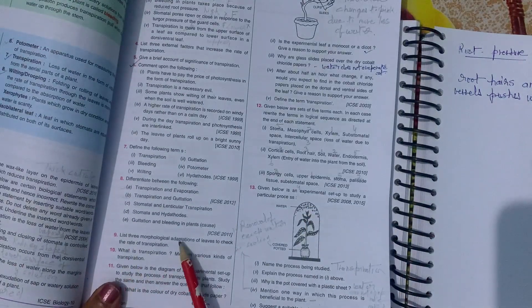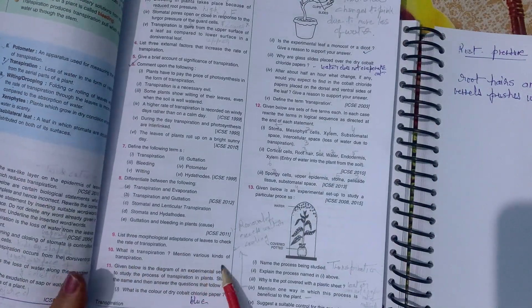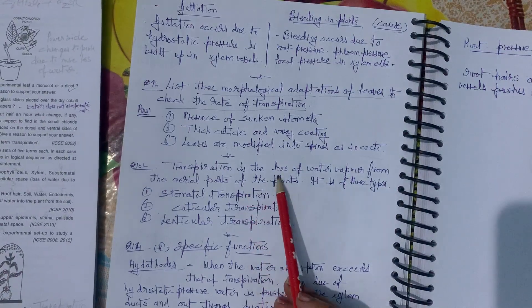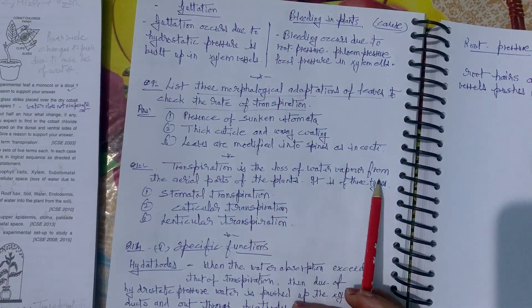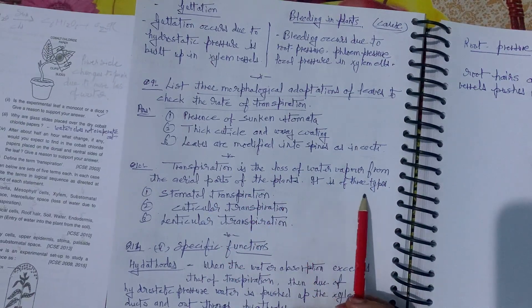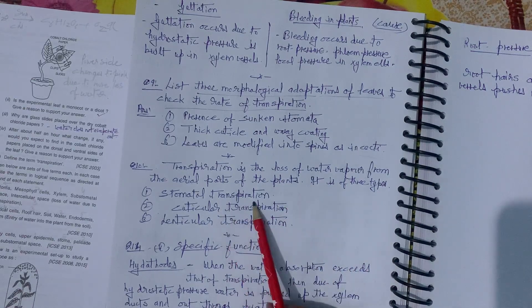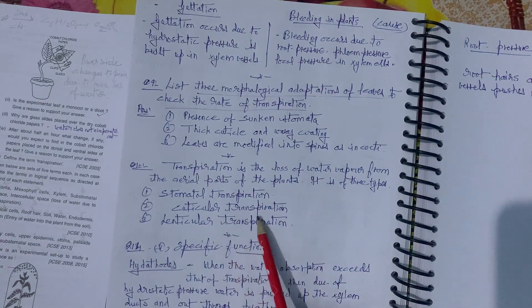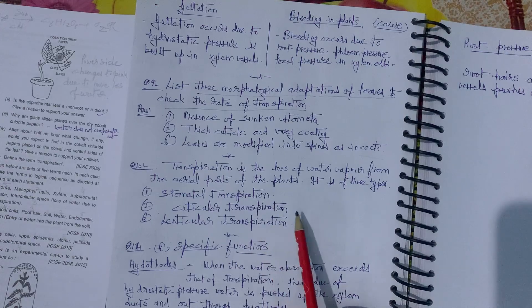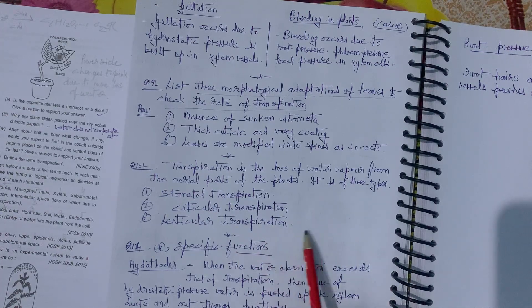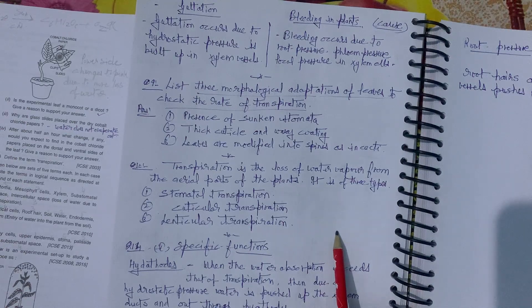What is transpiration? Transpiration is the loss of water vapor from the aerial parts of a plant. It is of three types: stomatal transpiration — through the stomata; cuticular transpiration — through the cuticle; lenticular transpiration — through the lenticles.